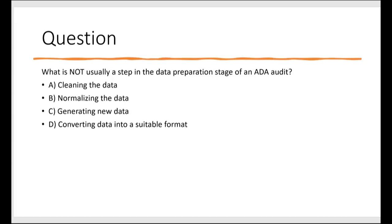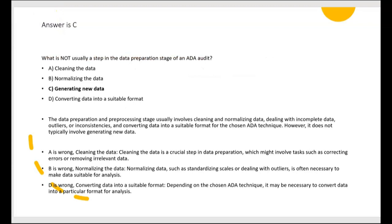What is not usually a step in the data preparation stage of an ADA audit? Would we clean the data? Yes, that's the first step. Normalizing the data? Yes. So don't pick A or B because they are steps in data preparation. C — generating new data — yeah, that wouldn't be done. Generating new data is not part of data preparation. D — converting data into a suitable format — yes, that's what we do in preparation. So the answer is C. Data preparation usually involves cleaning, normalizing, dealing with incomplete data, outliers, and inconsistencies, and converting data into a suitable format. It does not typically involve generating new data.